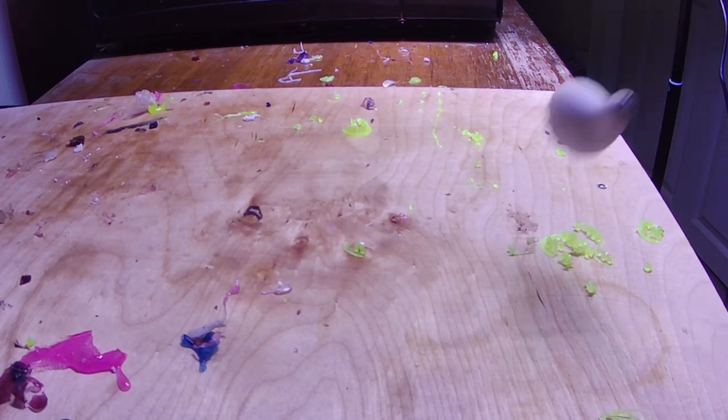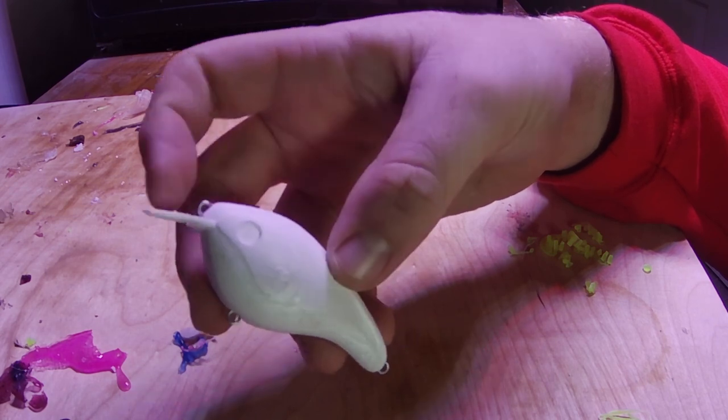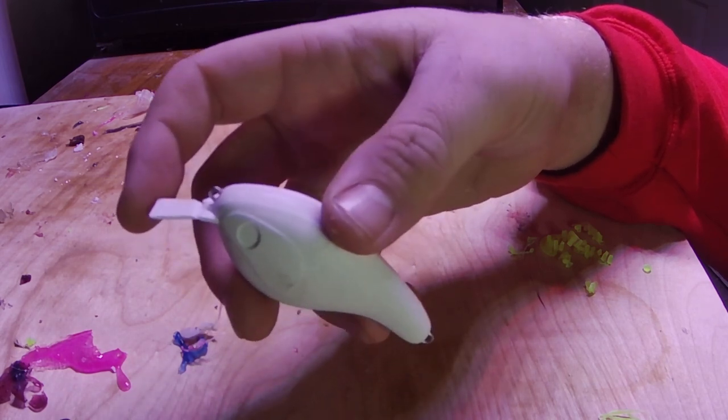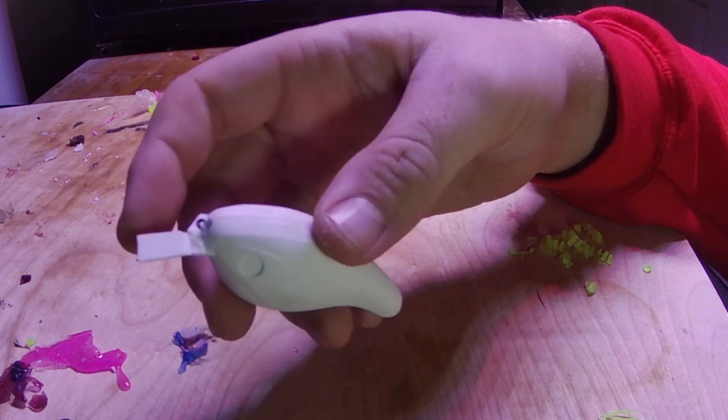We're going to make a squarebill today. The goal for today's video is going to be 3D printing our own squarebill lure. When I'm done with this, you guys are going to be able to print this and fish this yourselves for free, of course.